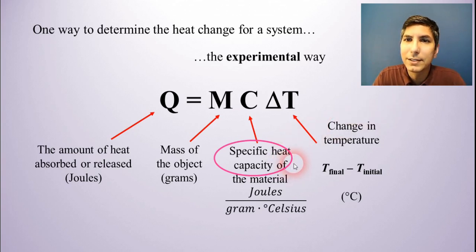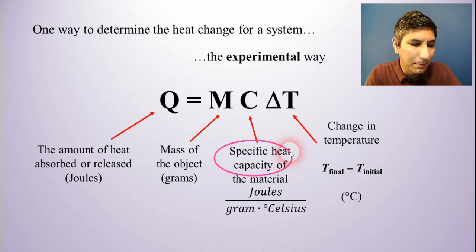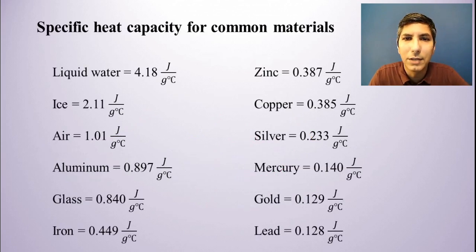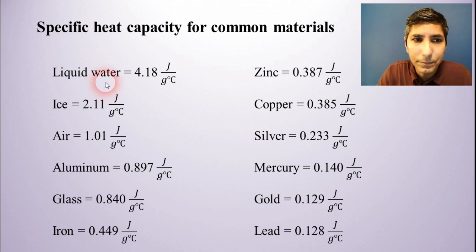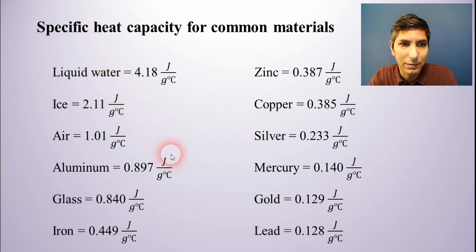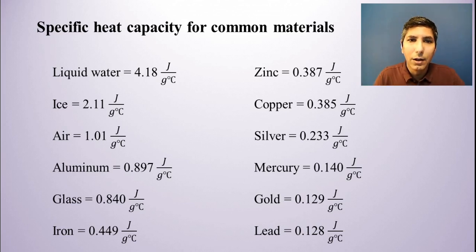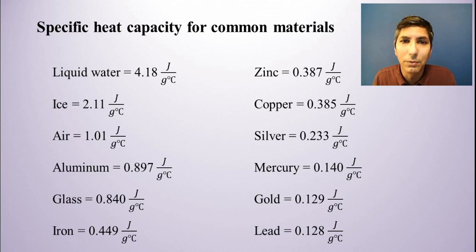Let's talk about specific heat capacity. A good way to think about it is to imagine specific heat capacity as a way to describe how well a material resists temperature change. Here I have some specific heat capacity values for some common materials. To illustrate this, let's imagine that we have a pot of water that you're going to boil on the stove. You turn on the stove, and about 30 seconds after you turn it on, you touch the bottom of the pot.